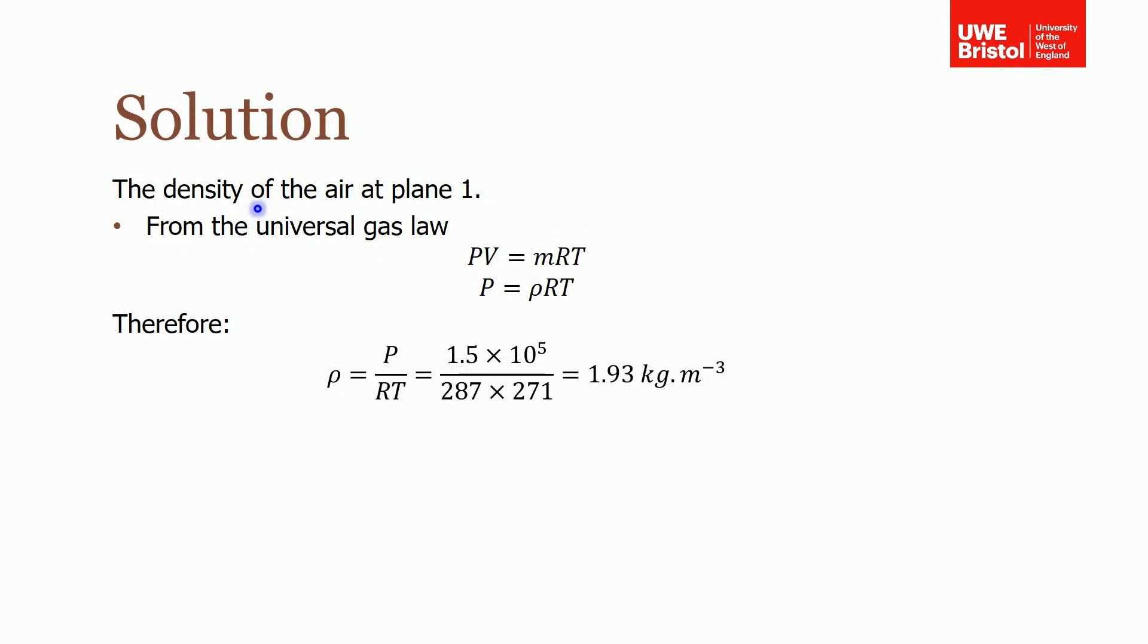For the air at plane 1, the density can be found from the universal gas law: PV equals MRT, or P equals rho RT. Dividing through by RT, we know all of these values.